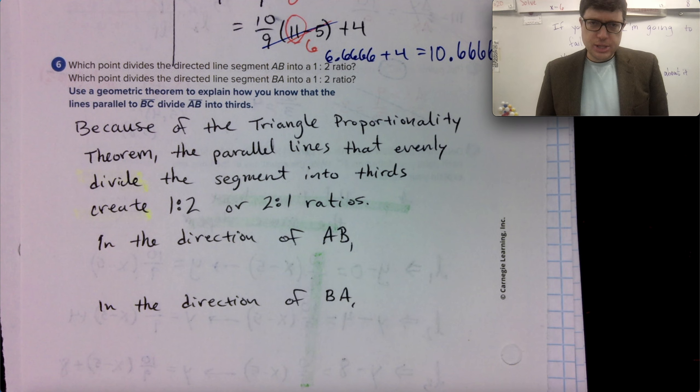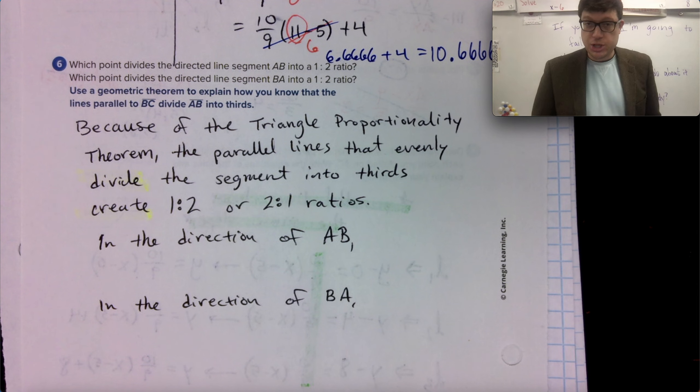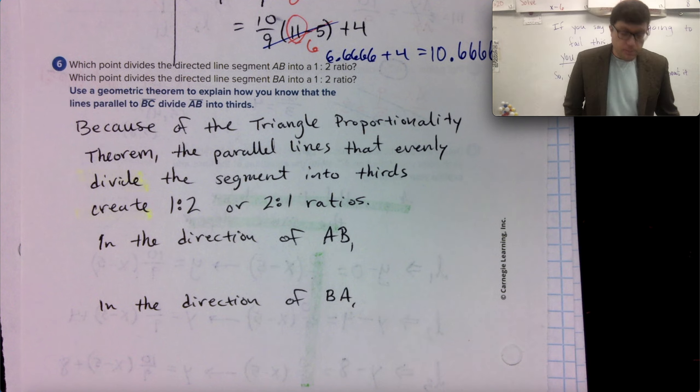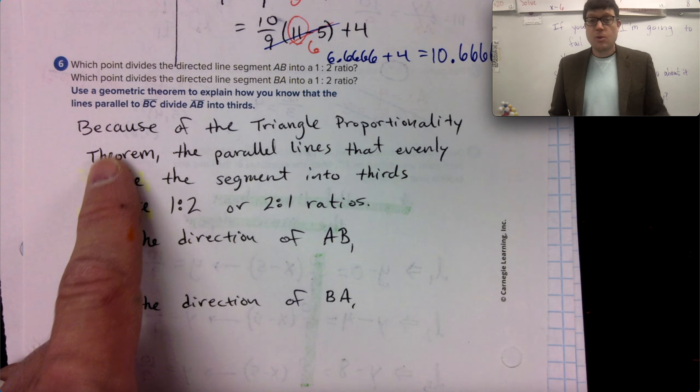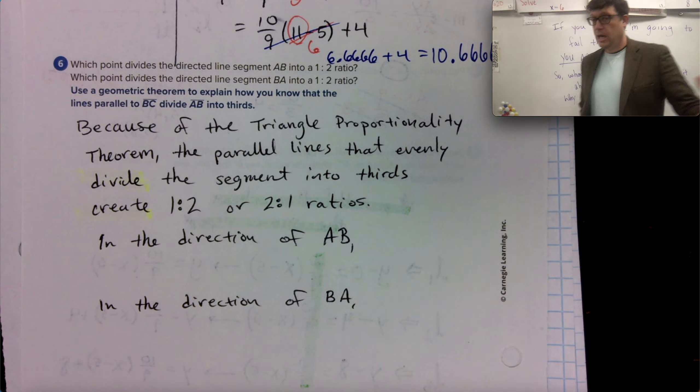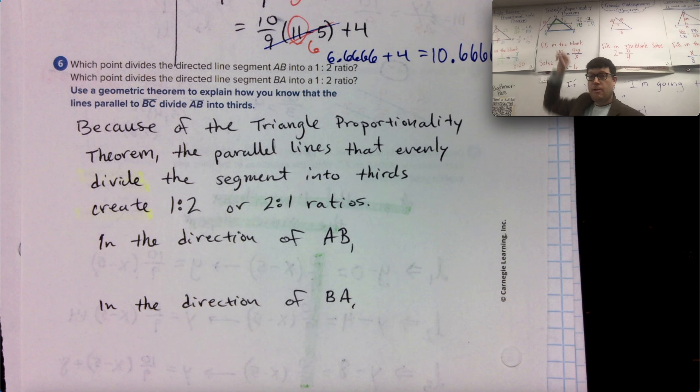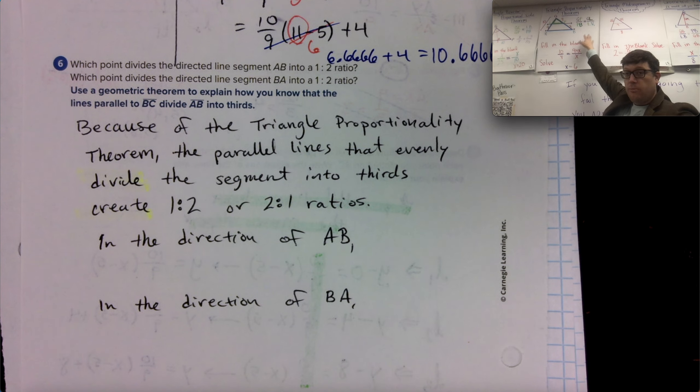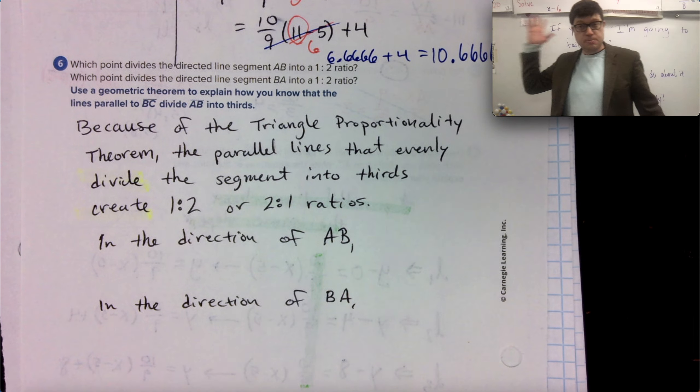Which point divides the directed line segment AB into a one to two ratio? And which point divides the directed line segment BA into a one to two ratio? The other direction, the geometric theorem to explain how you know this is the triangle proportionality theorem. We've created parallel lines. And if you create parallel lines, then the segments between those parallel lines can be formed into a proportion. Watch my one minute video on this one to explain it on this poster.